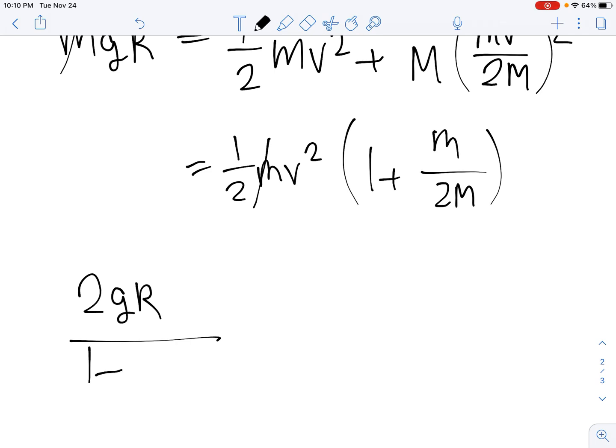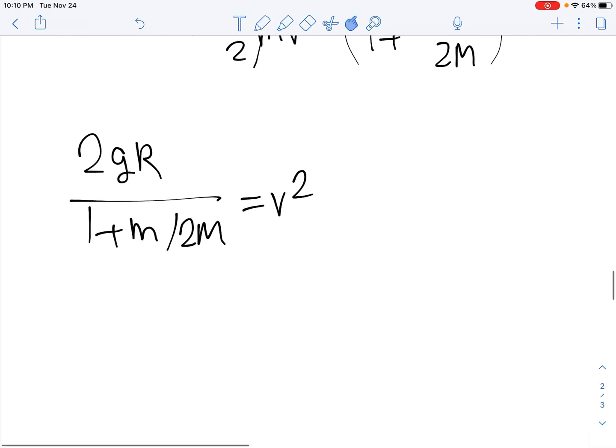And now we can effectively solve for the velocity of the mass when it reaches the bottom of the cylinder. How we do this is that let's first factor out one half mv squared from both sides. We can now divide through and multiply to cross out the m here and the m here. So we get 2gR over 1 plus m over 2M equals v squared.